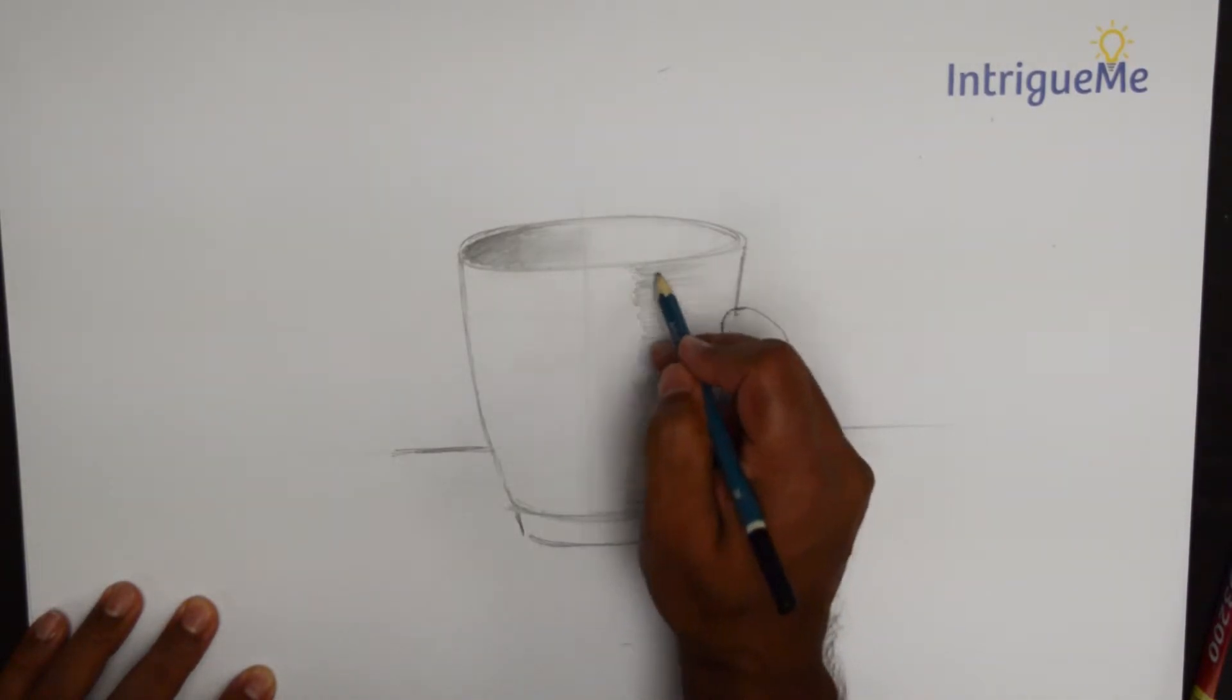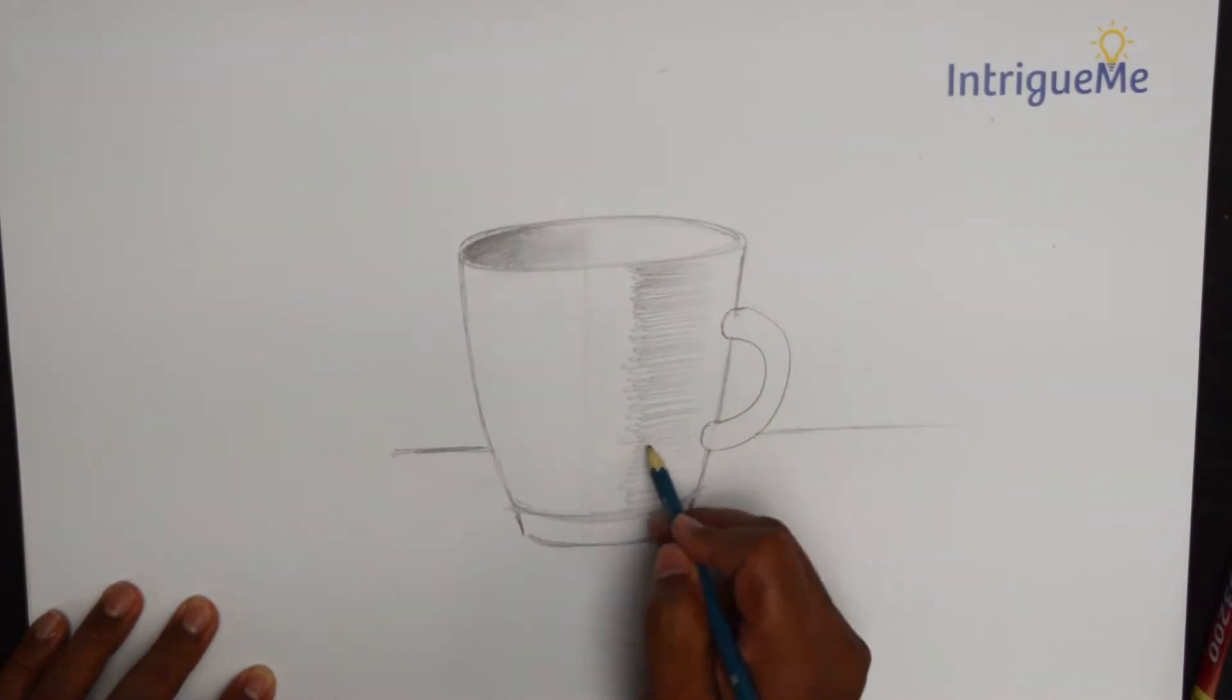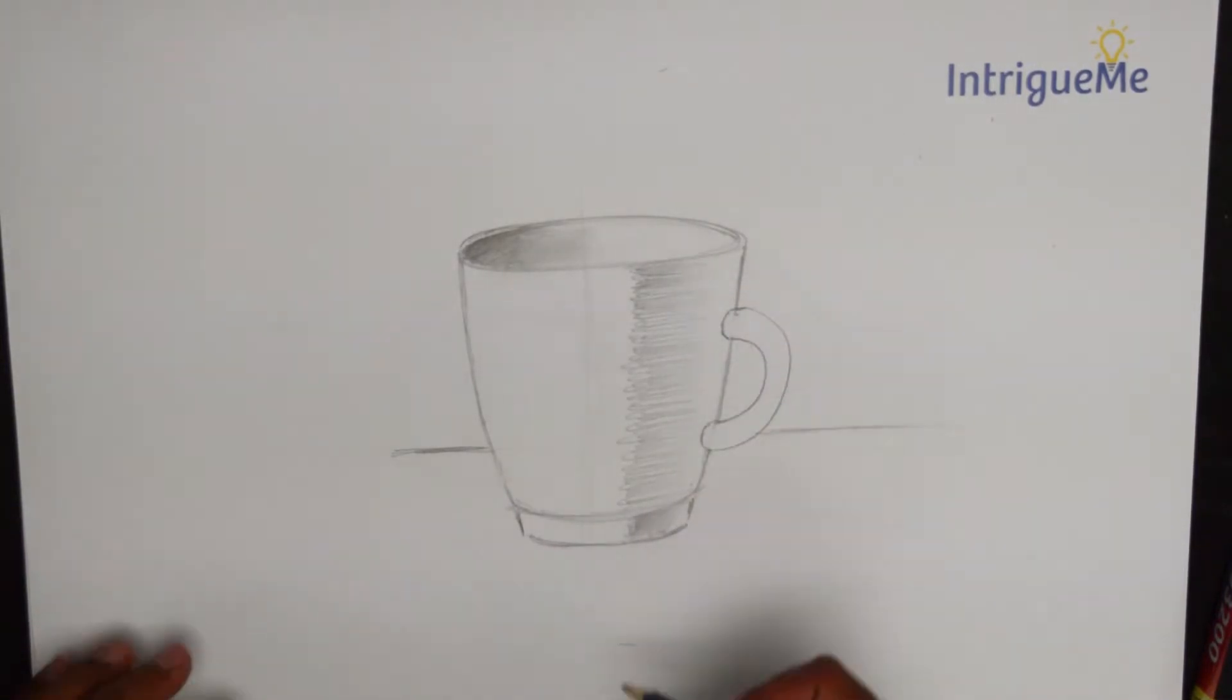So when you're doing this try to curve the crosshatch right around. And on this one try to have it a little different because the size and the curvature might be a little different to the main body.